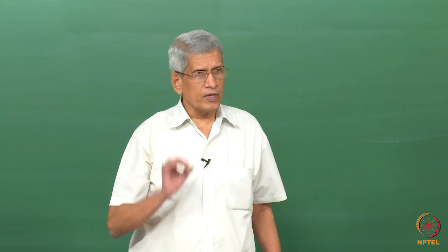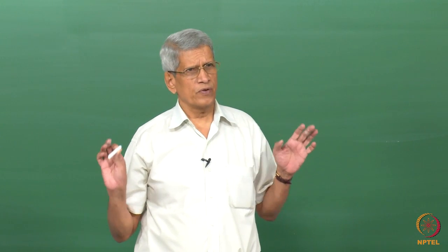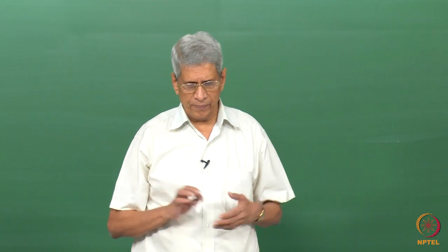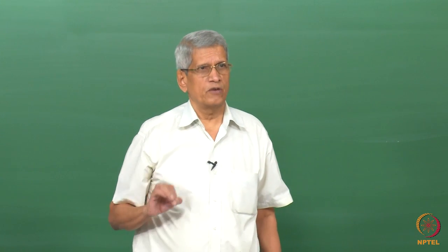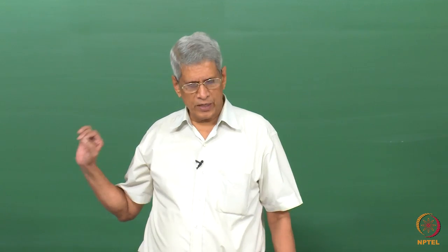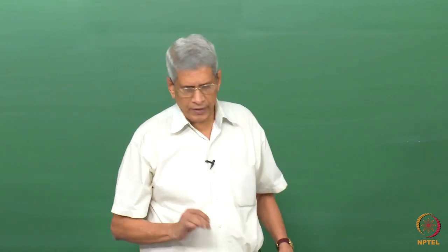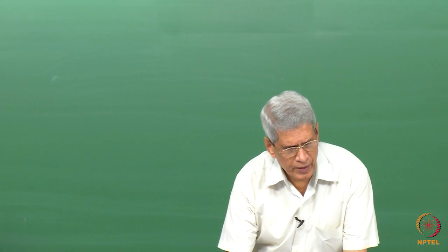The only problem with this approach is that it gives a qualitative way of finding the force magnitude, but it does not tell us in which direction the force is acting. In this particular case, the Burgers vector is in the negative direction, and σ_xy is applied in a particular direction. Substituting the negative value of b, the force turns out to be in the positive direction — this is all we can find out.